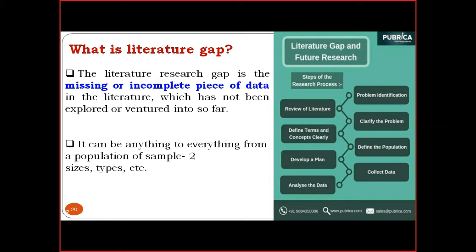The literature research gap is the missing or incomplete piece of data in the literature that has not been explored so far. For example, when reading a research paper, you may understand it thoroughly, but some steps, methods, or methodologies used to fulfill the stated objectives may not be clearly stated — something is missing or incomplete. Some papers give full information, but sometimes even after reading we cannot understand the paper clearly.